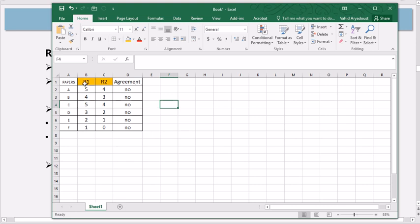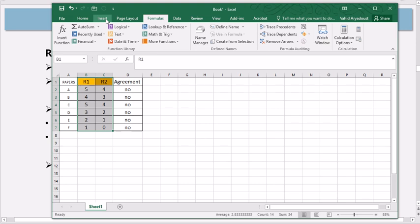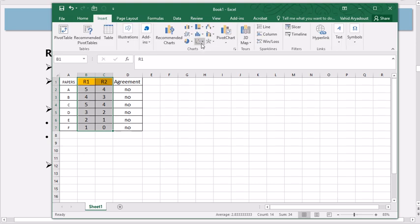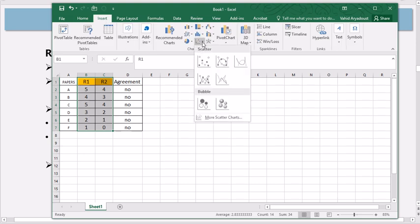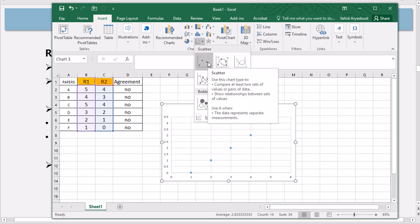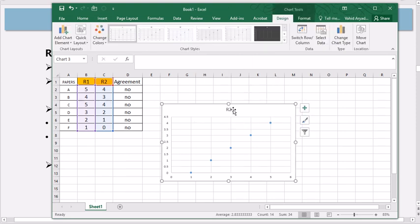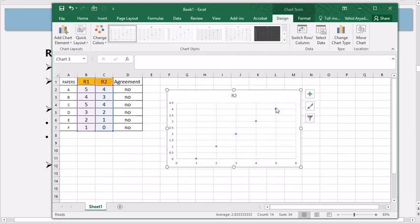However, this lack of agreement between the two raters does not mean that these two pairs of scores do not have any correlations. So I'm going to go to Insert and I'm going to get a scatter plot here, and just click on this scatter and I'll get a scatter plot. And you see they fall beautifully on one direct line.